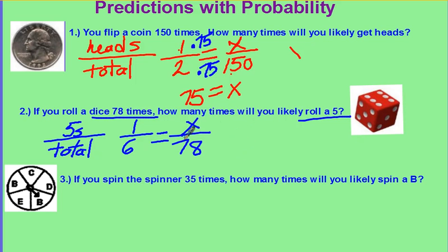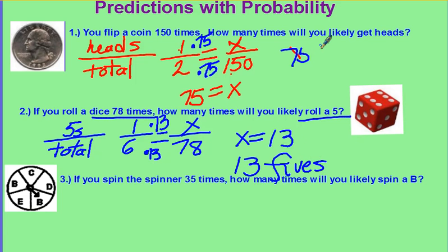You can use your equivalent fractions, or you can cross multiply. In this case, you can multiply by 13 on both sides. And x equals 13. Answering in words, 13 fives. Up here, this should be 75 heads.